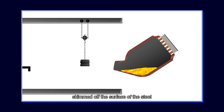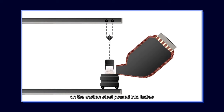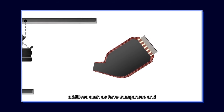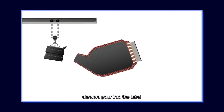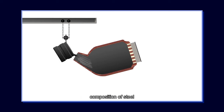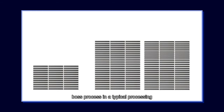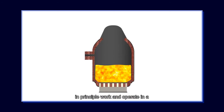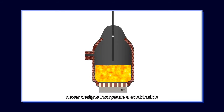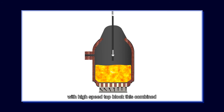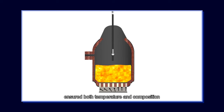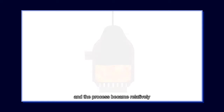Rocking of the converter on its central pivot aids the dispersion of both air and scrap iron within the molten iron. Slag is skimmed off the surface of the steel, and at the end of the blow the converter is tilted and the molten steel poured into ladles. Additives such as ferro-manganese and ferro-silicon are added as the molten steel is poured into the ladle to achieve the final chemical composition required. The Bessemer process produced up to 30 tons per blow, compared to 400 tons with the modern BOF process, in a typical processing time of 40 minutes. Newer designs incorporate a combination of bottom blow with high-speed top blow, ensuring both temperature and composition were homogeneous.